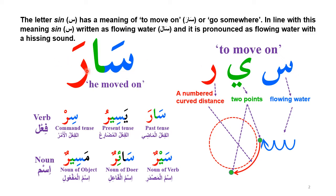The Arabic word 'Sarah' means 'he moved on' and represents a natural movement. We can look at the root 'seen-ya-ra': the seen is represented here as waves of water, and these two dots represent the starting and ending point of a distance. When you move on planet Earth, you follow a curved path. So 'Sarah' means to go a certain distance, which is a little bit far away.